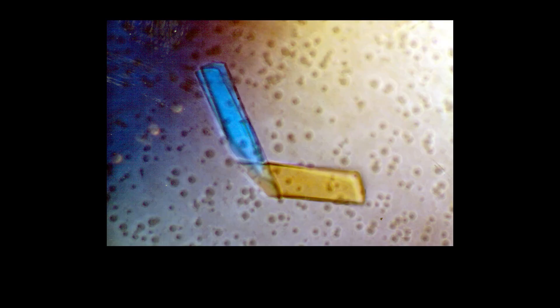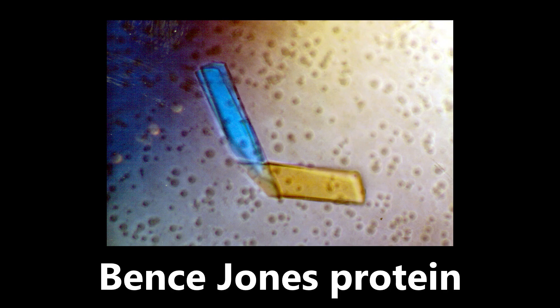Next image: we have a crystal-like structure — this is an example of a Bence-Jones protein. Commit this image to memory; it's very unique. The high-yield thing to know about Bence-Jones proteins is that they are seen in multiple myeloma. Important to know that.